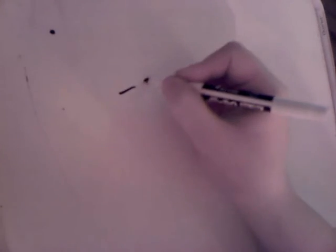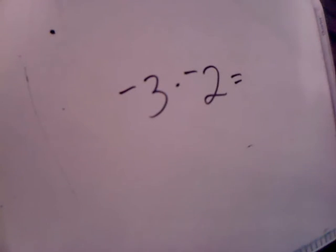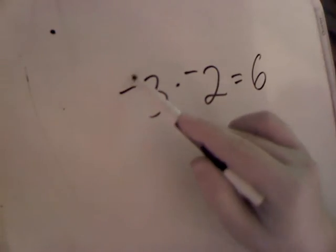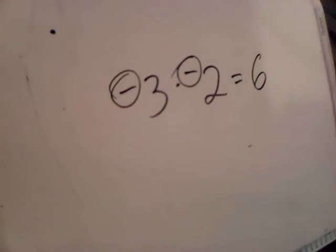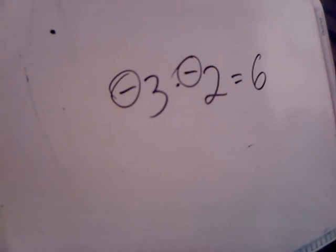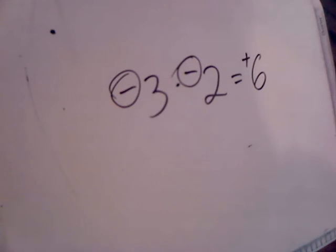Another problem. Negative three times negative two. First thing you do is you just multiply like normal. Three times two is six. Now what you're going to do, we have two negative signs. Two negatives make a positive. So our answer is going to be positive six.